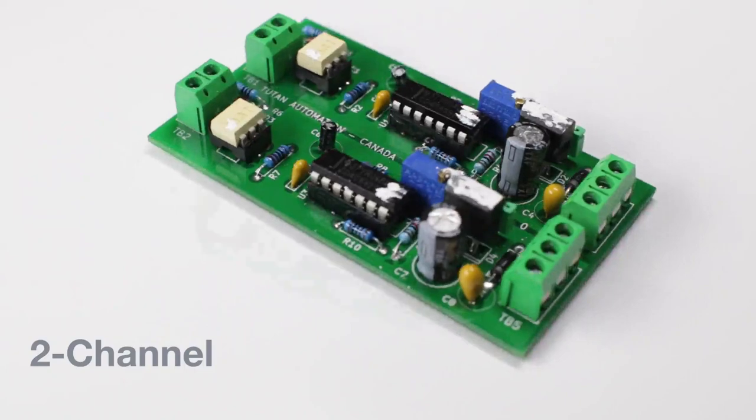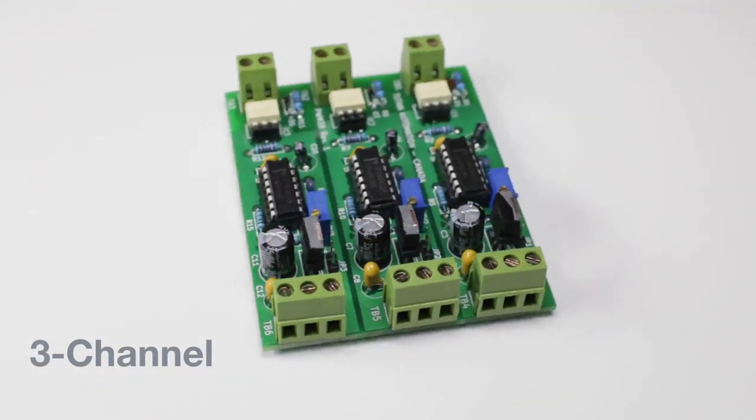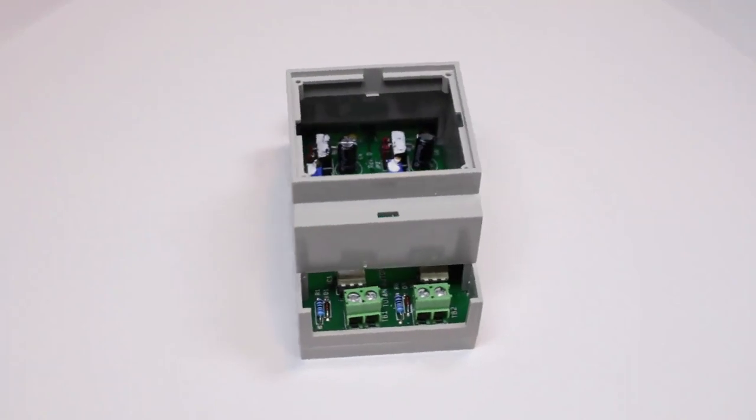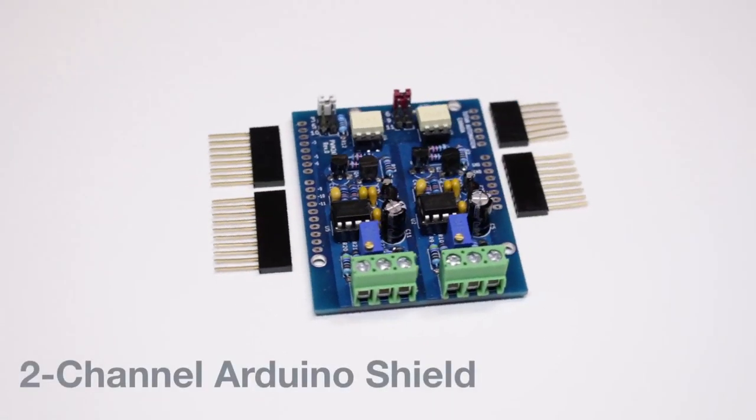Currently, we provide a two-channel and a three-channel industrial board that can be housed in commercial DIN rail enclosures. We also have a two-channel Arduino shield version.